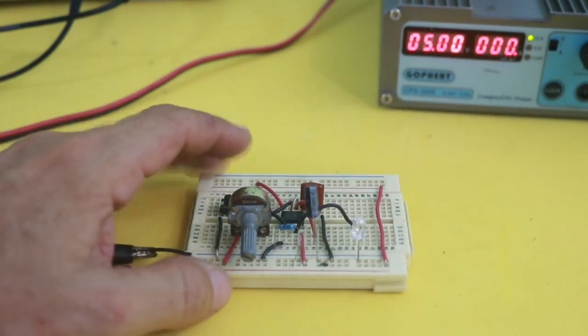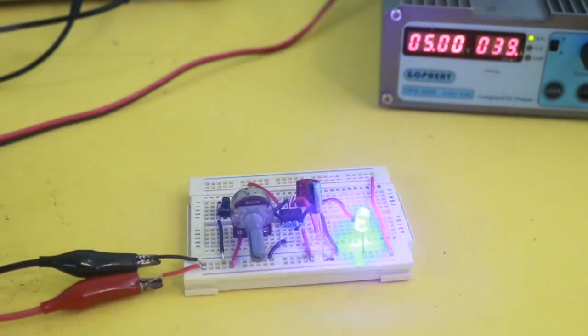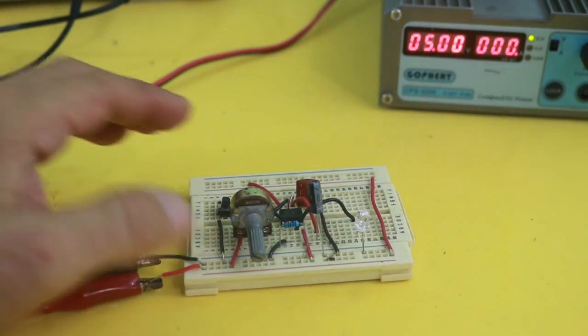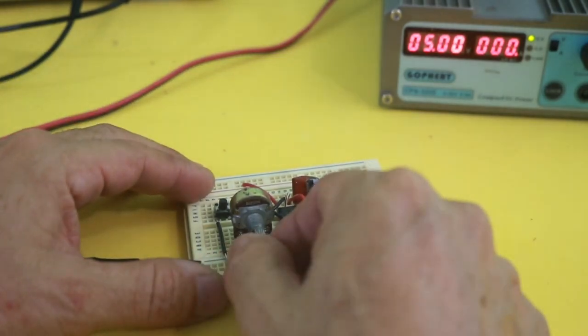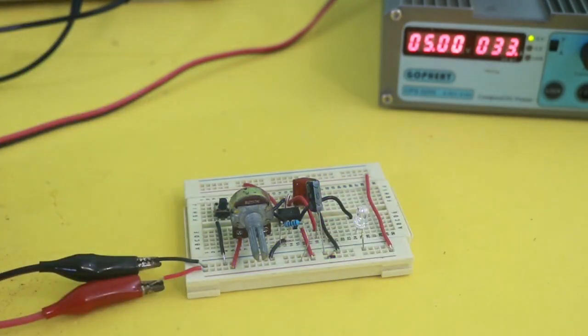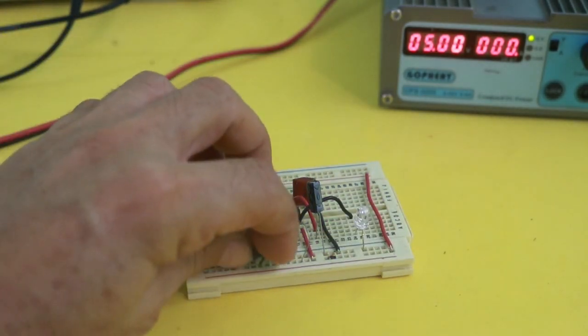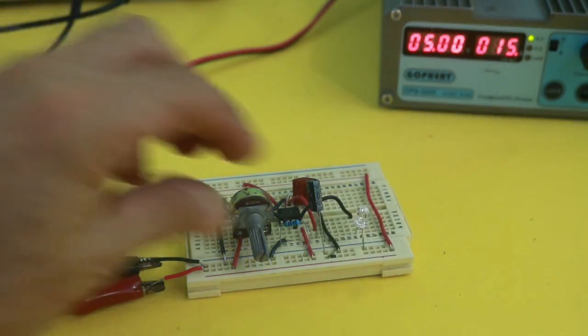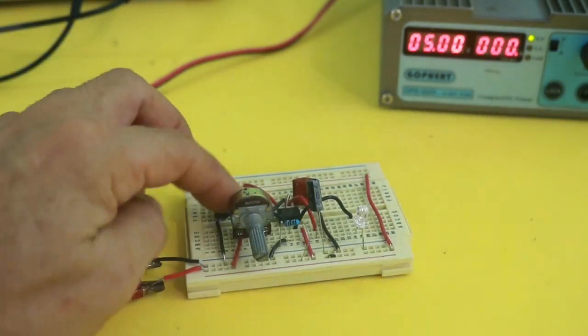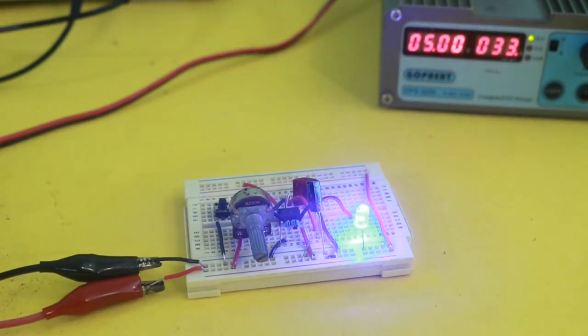So let me push the button and you can see that the LED only shines for a fraction of a second. If we increase the resistance, the time will also increase. More resistance will mean more time.